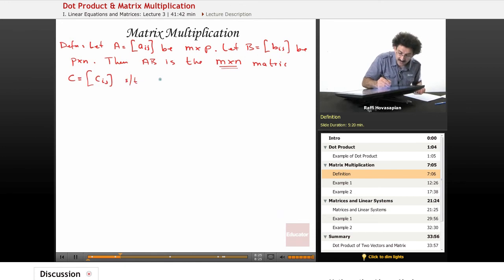Then AB is the M by N matrix C equals C sub ij, such that the ijth entry of C is equal to row sub i of A. In other words, the ith row of A dotted with the jth column of B.